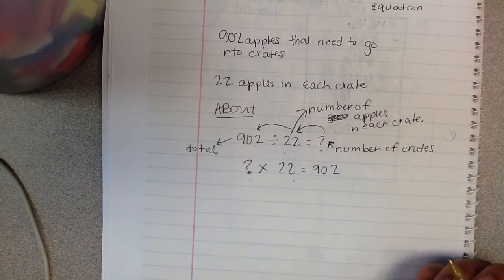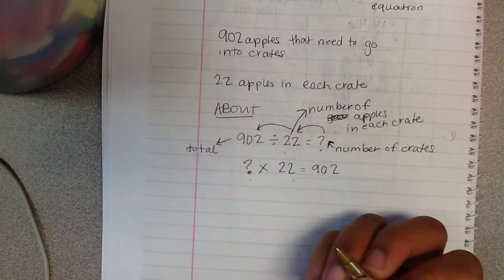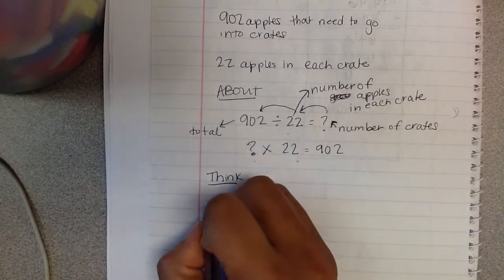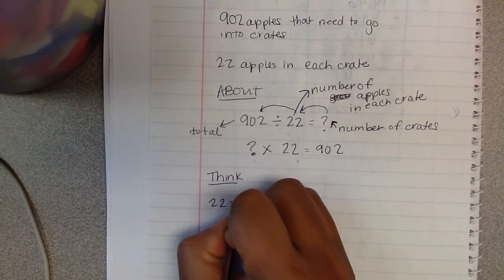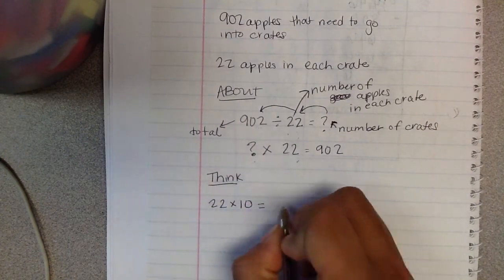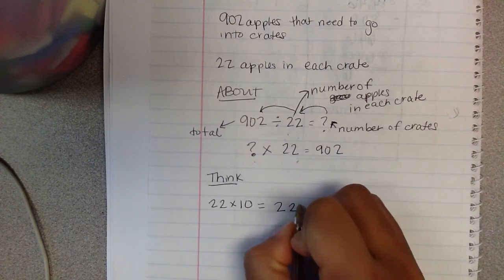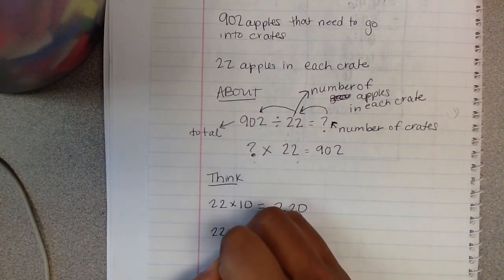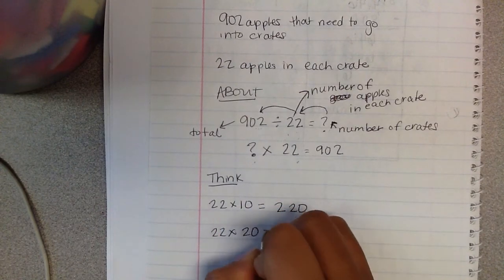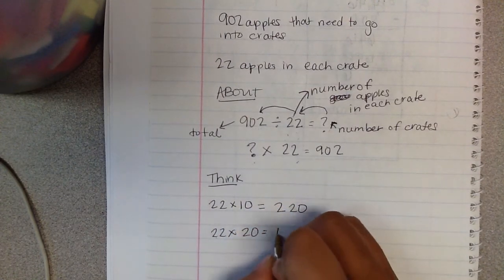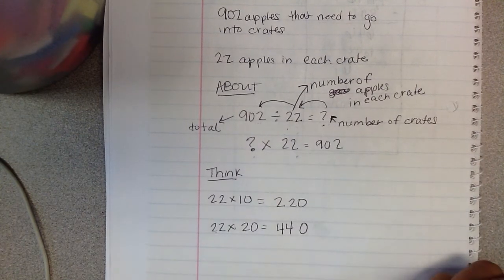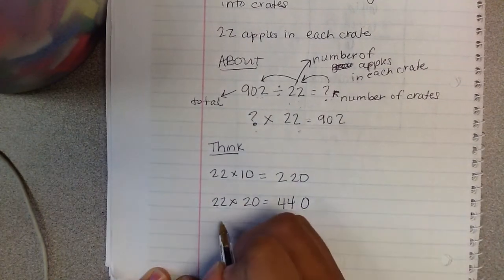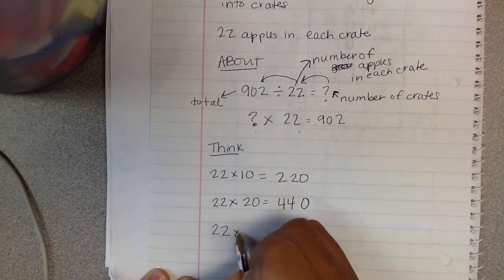So I'm going to think something times 22 equals 902. Well, I'm not really sure about that, but I can go with my easy 10 facts. So I'm going to do a think box. First thing, in fact, I'm going to come up with is 22 times 10. I know that is 220. If I take 22 times 20 now, 2 times 22 is 44. That's 440. I'm still not really close to that 902 that I need. If I take 22 times 30, 3 times 22 is 66, so that's 660.